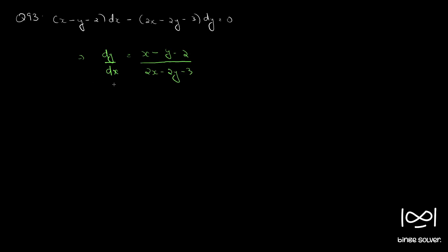Now, if we make an adjustment, we can write dy by dx is equal to x minus y minus 2 by 2 into x minus y minus 3. As you can see, dy by dx is equal to a function of x minus y. So in such cases, we give a substitution x minus y equal to u.